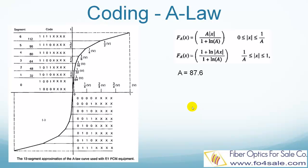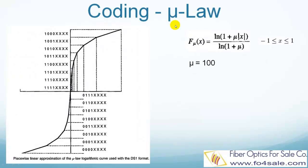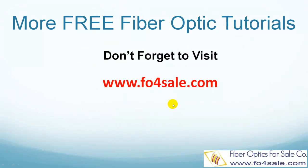The second method is called Mu-law. It follows the logarithmic formula listed here, with mu equals to 100. The North American T1 system uses Mu-law quantization and coding process. The process is similar to that of A-law. Please leave your comment below if you'd like to see other topics, and don't forget to visit foforsale.com for more free fiber optic tutorials. I will see you in the next video.